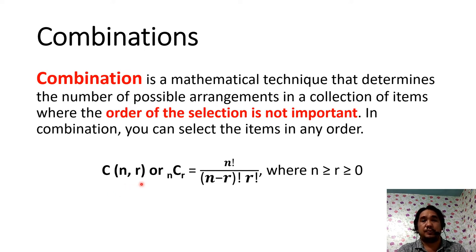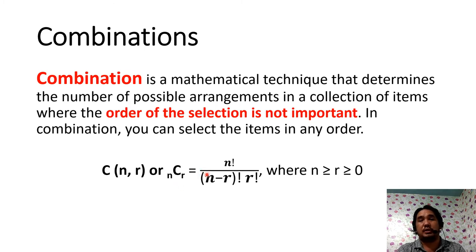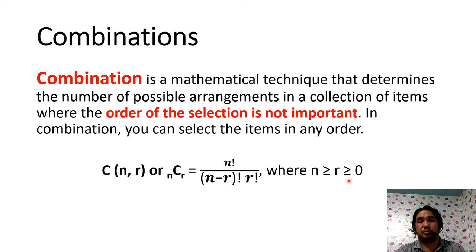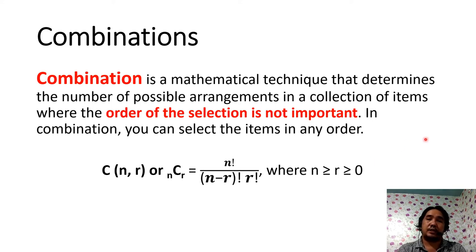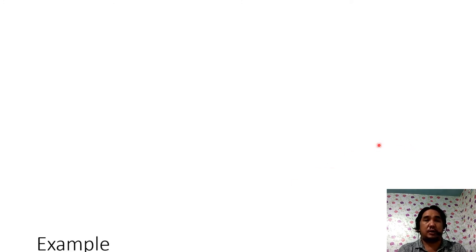The key difference between combination and permutation is that in permutation the order of selection is important, whereas in combination the order of selection is not important. The formula for combination is C(n, r) — the combination of n taken r at a time — which equals n factorial over the quantity (n minus r) factorial times r factorial, where r must be greater than 0 but less than or equal to n.